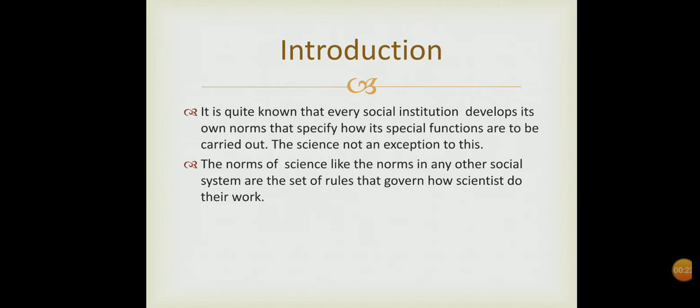Science is not an exception to this. The norms of science, like the norms in any other social system, are the set of rules that govern how scientists do their work. Members of the scientific community have developed a set of norms to control and govern their own work. Those norms are not made very much public, but they are implicitly followed by most of them. Those who violate these norms are tackled by the community members in their own ways.